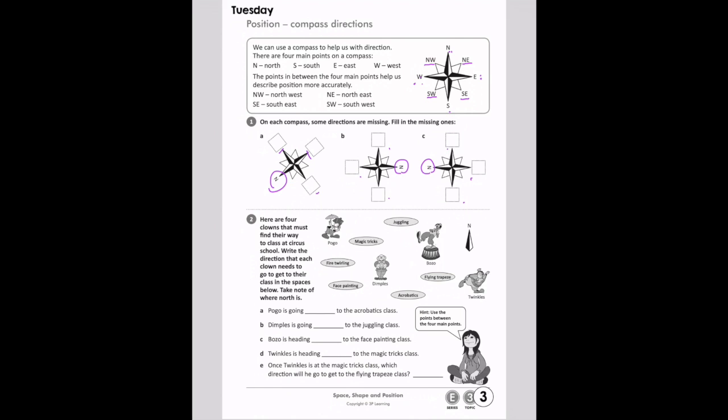All right, in number two, you have to follow the directions. Here are four clowns that must find their way to class at circus school. Write the direction that each clown needs to go to get to their class in the spaces below. So, take note of where north is. North is facing this direction. So Pogo, in A, is going to acrobatics class. He's going this way. Which direction is he going? If this is north, and this is south, this is east, and this is west. You're going to use that information for the rest of these questions.